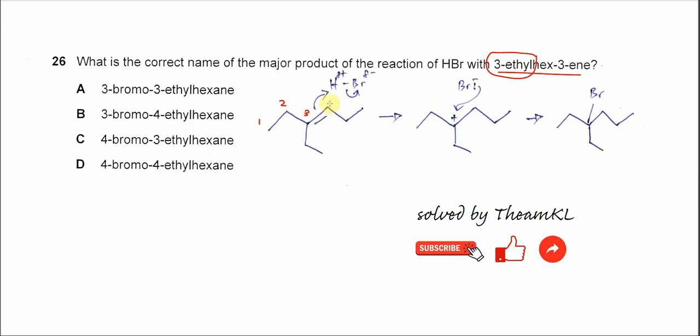Now, the hydrogen will add to which carbon? Hydrogen must add to this carbon because this carbon has one hydrogen. Following Markovnikov's rule, the hydrogen always will add to the carbon with more hydrogen atoms.